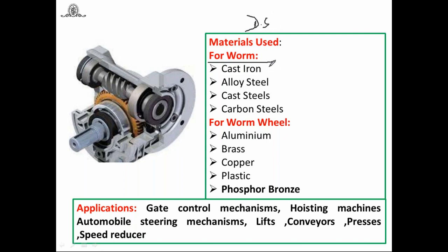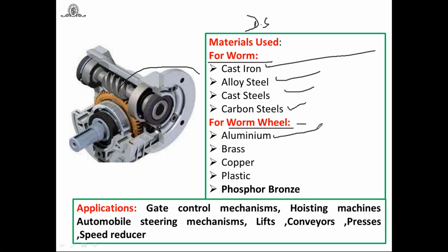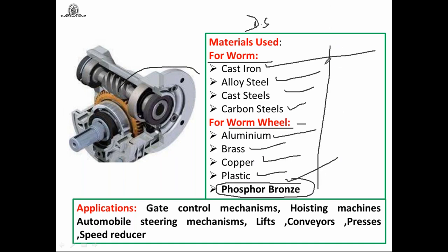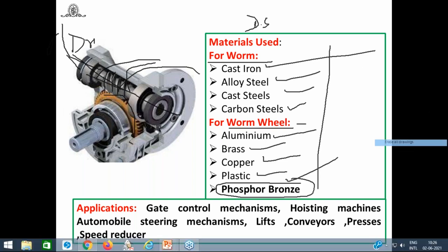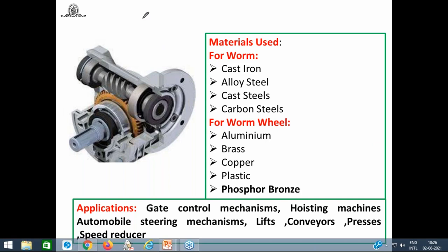Dissimilar metals are used for worm and worm wheel. The worm is made of harder materials like cast iron, alloy steel, cast steel, or plain carbon steel such as 38C8 or 45C8. The worm wheel is made of softer materials like aluminum, brass, copper, or plastic — the most preferred material being phosphor bronze. This is because the worm, connected to the motor, runs at high speed, and along with rolling there is sliding friction causing excessive heat generation.